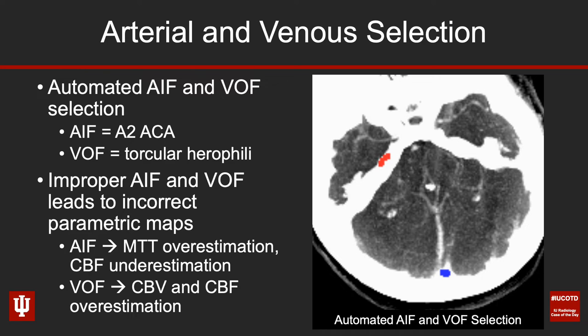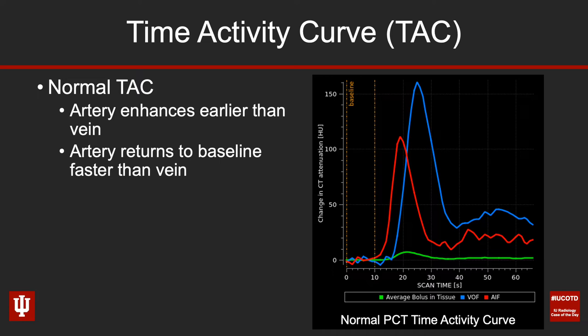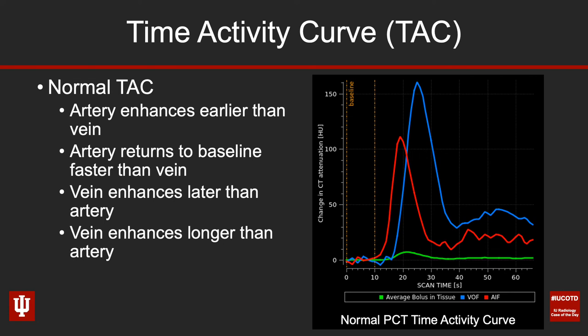The next thing I look at is the time activity curve, and you really need to know what a normal one looks like. The artery is the red tracing and the vein is the blue tracing. The artery enhances earlier than the vein and returns to baseline faster. The vein enhances later but lasts longer with enhancement. The vein may have more than one peak; the artery should not.